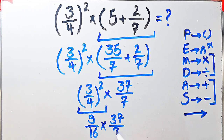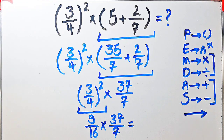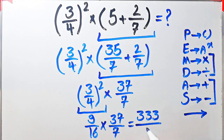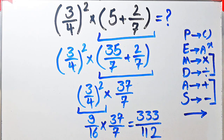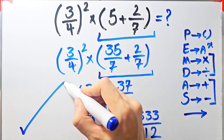9 over 16 times 37 over 7 equals 333 over 112. The final answer of this question equals 333 over 112. Thanks for watching. Please subscribe to the channel and leave a comment. Goodbye.